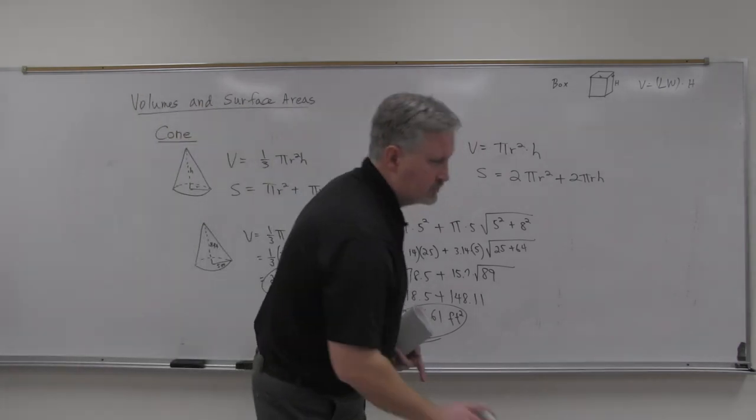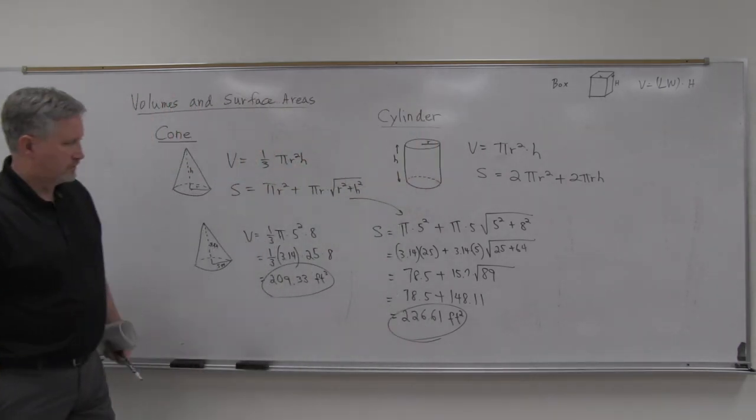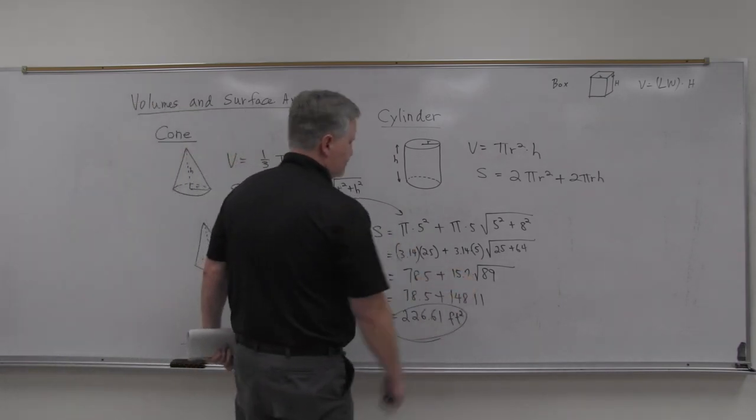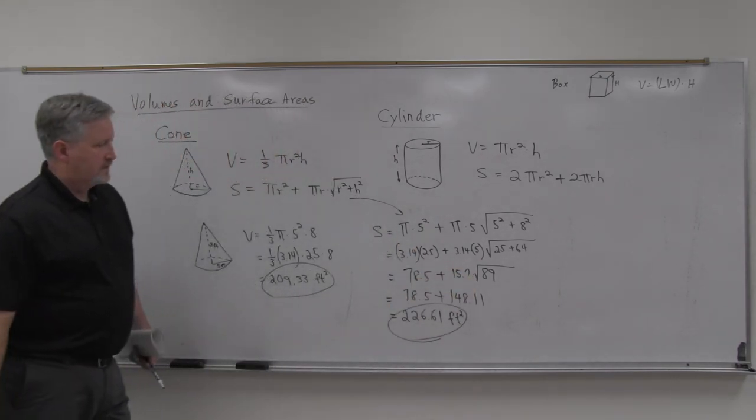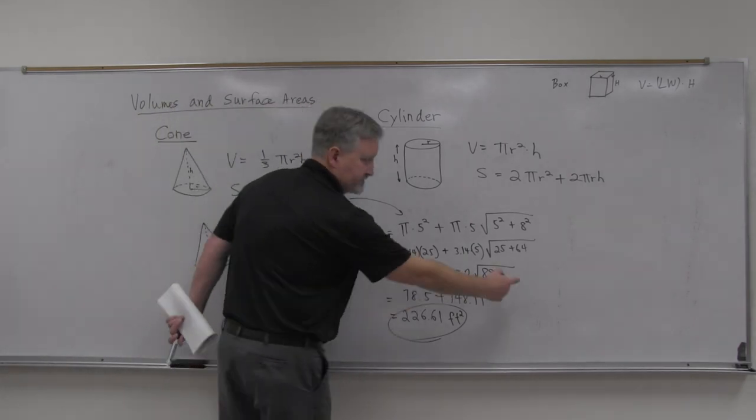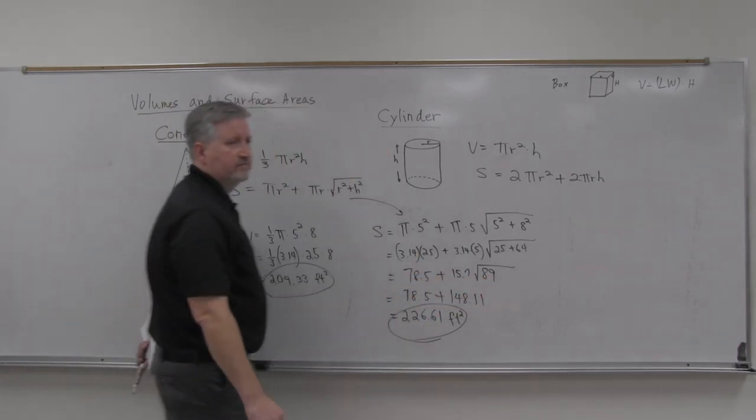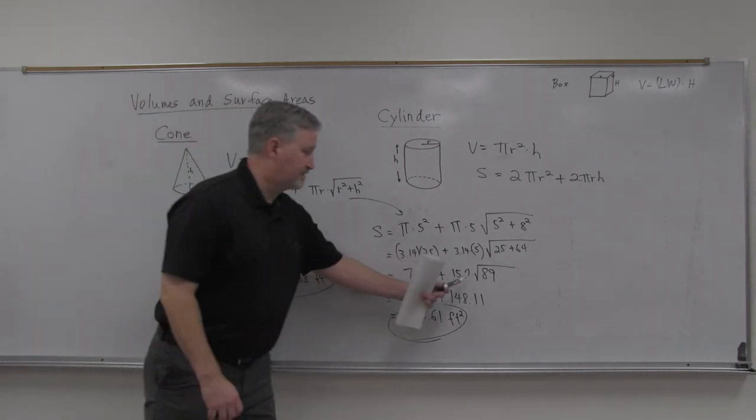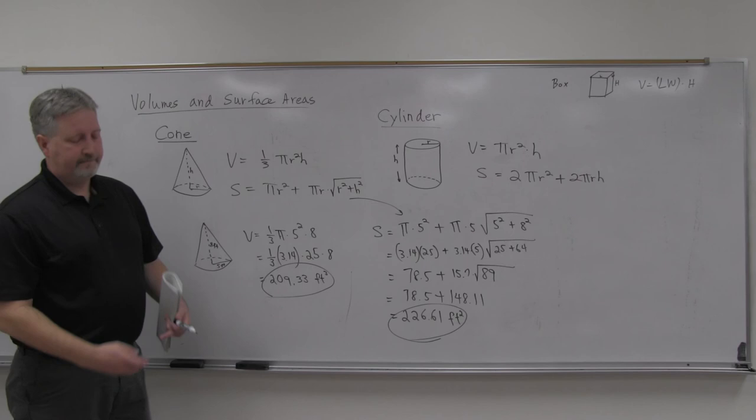So you need to square root the 89. Square root the 89. And then times it by the 15.7? Times it by the 15.7 before you add. Yeah. I mean, if you have a scientific calculator, if you just enter it in just like that, it'll do it. It'll do the times first. Yeah. Okay.